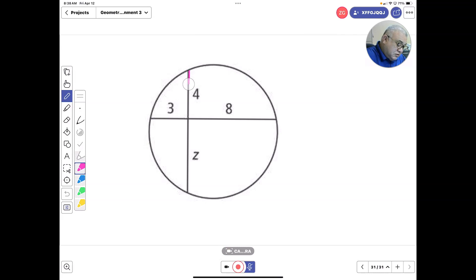We're going to get this segment measurement and this segment measurement which are parts of the segment. So that's going to be 4 times z. We're going to get this part which is 3 times this part.